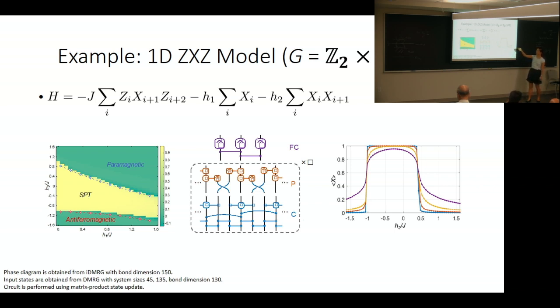Without these two perturbations, the ground state is the cluster state. The phase diagram in the parameter regime we're looking at has three different phases: paramagnetic, SPT, and antiferromagnetic. The blue line and red line here